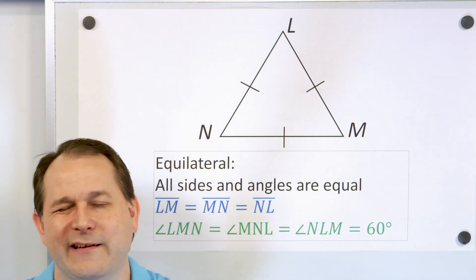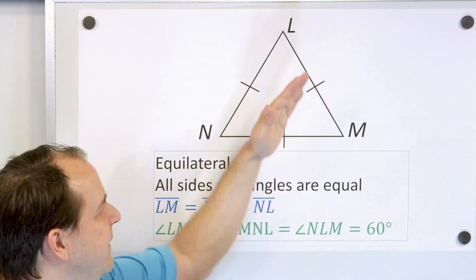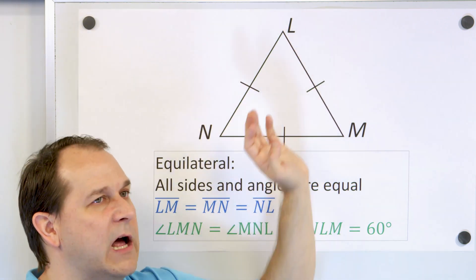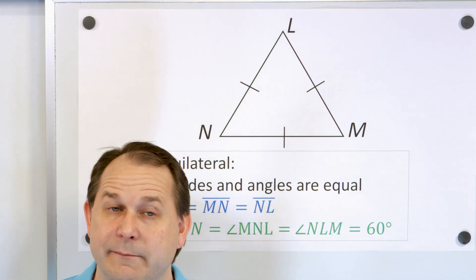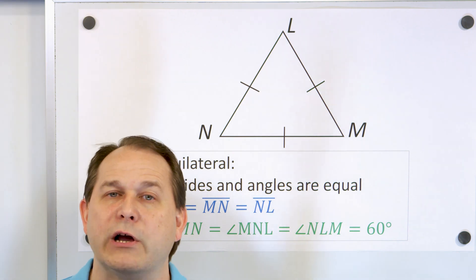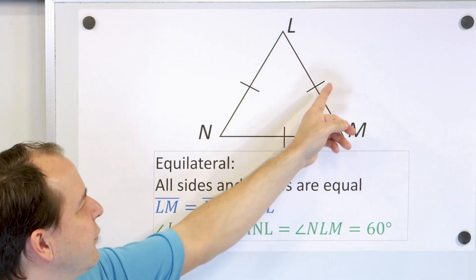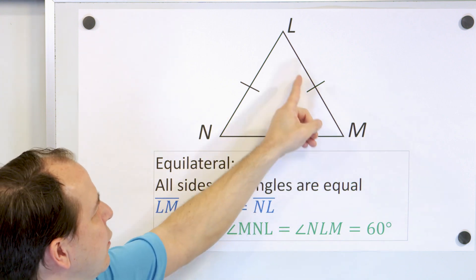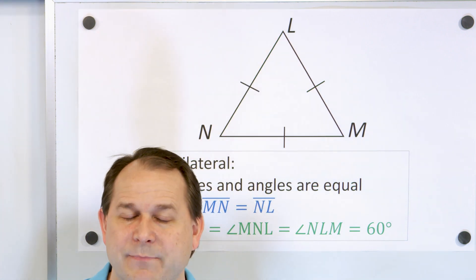Congruent means essentially they're the same length. This line is in a different direction than this line, so they're not the same segment, but they do have the same length, so we call them congruent. All three sides are congruent — that's what the markings mean — and all of these angles are also the same.